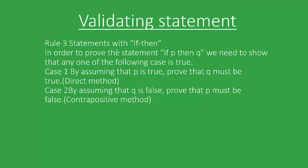Rule 3 is for implications. When we have 'if... then...' statements, in order to prove that 'if p then q' is true, we need to show that any one of the following cases is true. Case one is the direct method: by assuming p is true, we have to prove q must be true. Case two: we prove that if q is false, then p must be false. Note the word 'must' — it should not be 'can be'; it must be true or false.